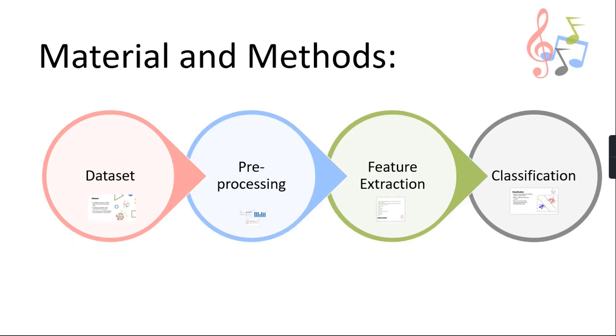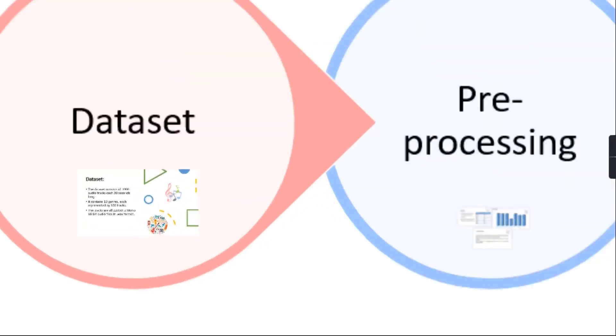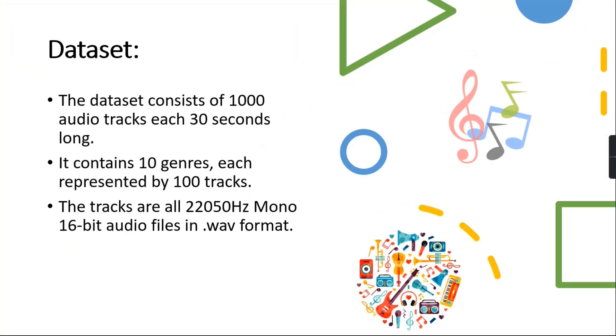Moving on to the material and method. Firstly we are going to talk about the data set used in this technique. GTZAN is used as a data set. GTZAN genre collection data set was used to perform in this classification. Data set consists of 1000 audio tracks each of 30 seconds long. It contains 10 genres but for this research I have used only 5 genres, which are blues, classic, hip hop,